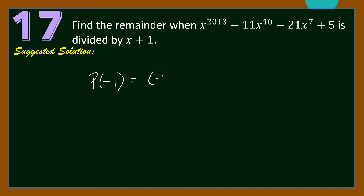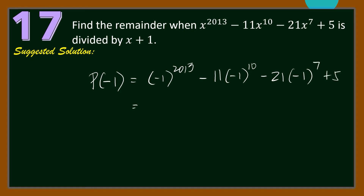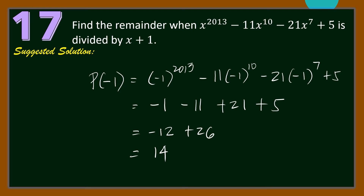P(−1) = (−1)^2013 − 11(−1)^10 − 21(−1)⁷ + 5. Since (−1)^2013 = −1, (−1)^10 = 1, and (−1)⁷ = −1, we have −1 − 11(1) + 21(1) + 5, which equals −1 − 11 + 21 + 5 = −12 + 26 = 14. Hence, the remainder is 14 when the given polynomial is divided by x + 1.